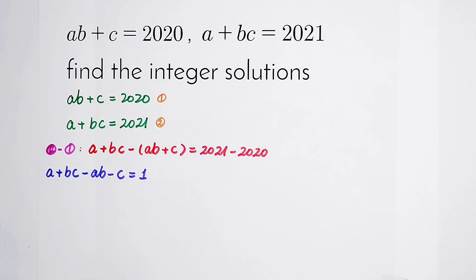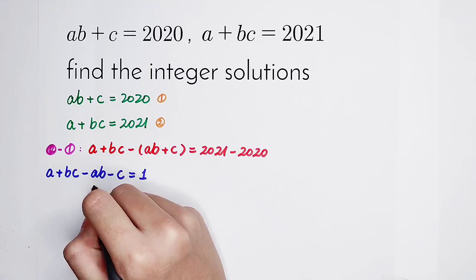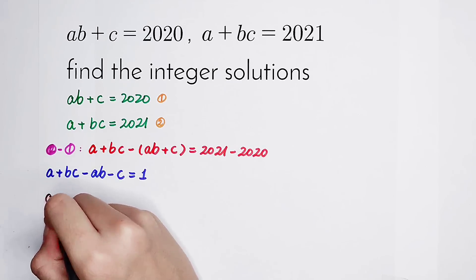Next step, factoring. We have to factor the left-hand side. From A minus AB, we can take out an A. So that is, A times 1 minus B in the bracket left.